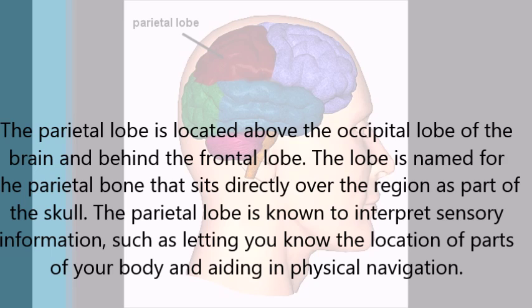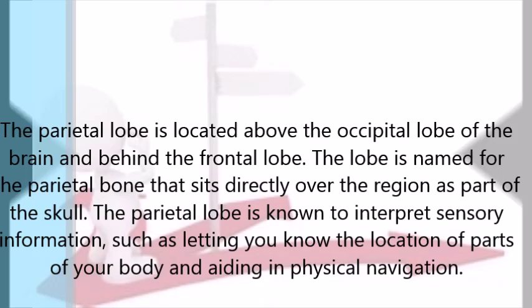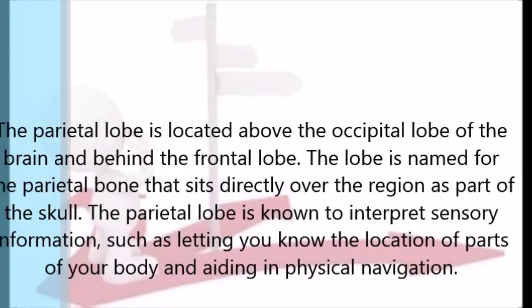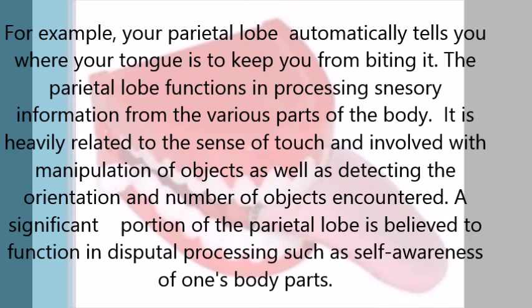The parietal lobe is known to interpret sensory information, such as letting you know the location of parts of your body and aiding in physical navigation. For example, your parietal lobe automatically tells you where your tongue is as you chew, to keep you from biting it.